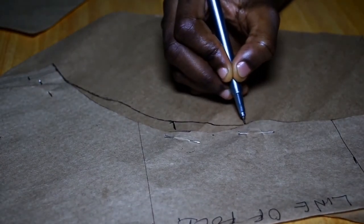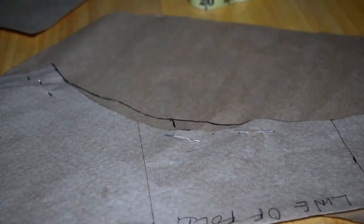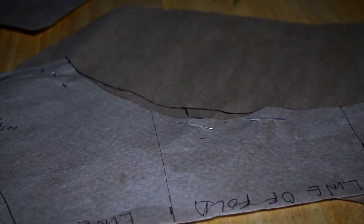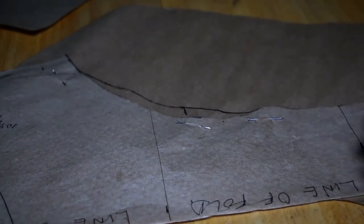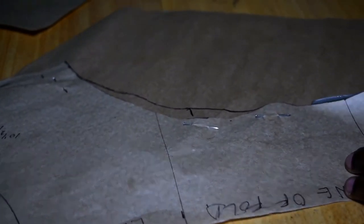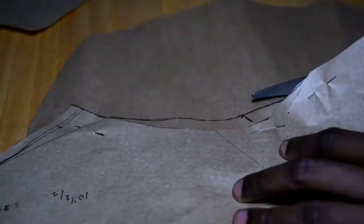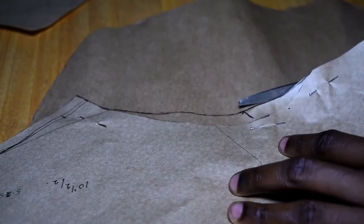So this is the freehand form of cutting your princess seam for the front bodice. And then I cut it out, so my pattern is ready after cutting to be cut on fabric.